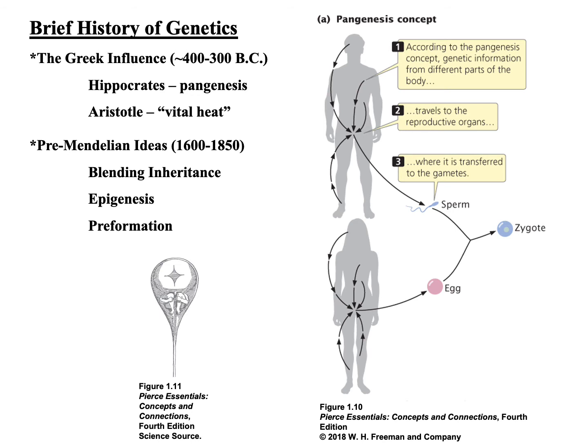For example, with blending inheritance, if you had a very tall parent and a very short parent, you would expect their offspring to be middle or intermediate in size. Another example: if you take blue paint and yellow paint and mix them together, you get green. This blending of the two colors represents the concept of blending inheritance — characteristics from one parent and the other somehow blended together to produce the characteristic seen in the offspring.